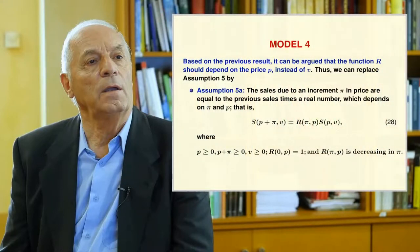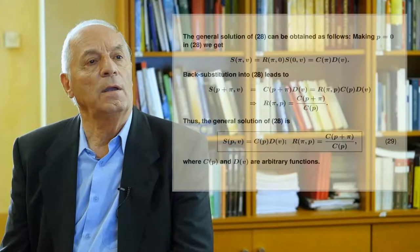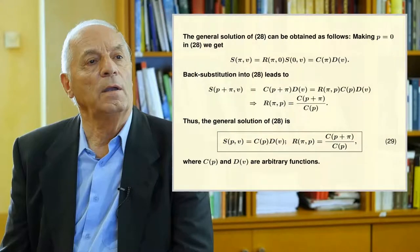Model 4 is based on this result. It can be argued that R should depend on the price P instead of V. We replace Assumption 5 with Assumption 5a: the sales due to an increment Pi in price are equal to the previous sales times a real number which depends on Pi and P, that is, functional equation 28, where the conditions at the bottom of the slide must be satisfied. Making P equal to 0 in 28 gives the expression at the top of the slide, and back substitution yields the R function. The general solution of 28 is expression 29, where C and D are arbitrary functions.